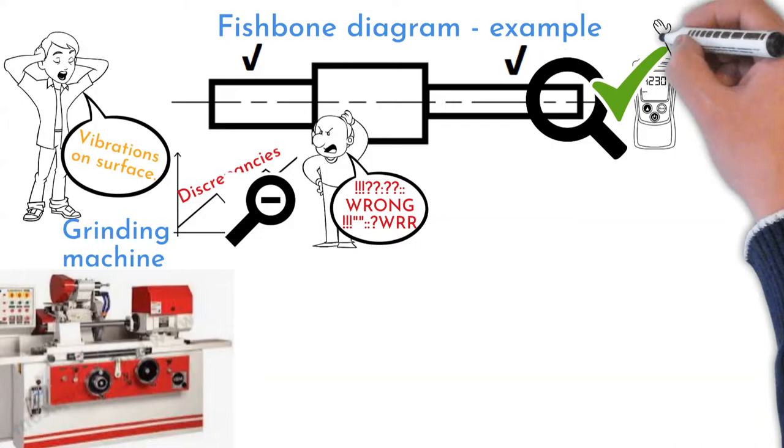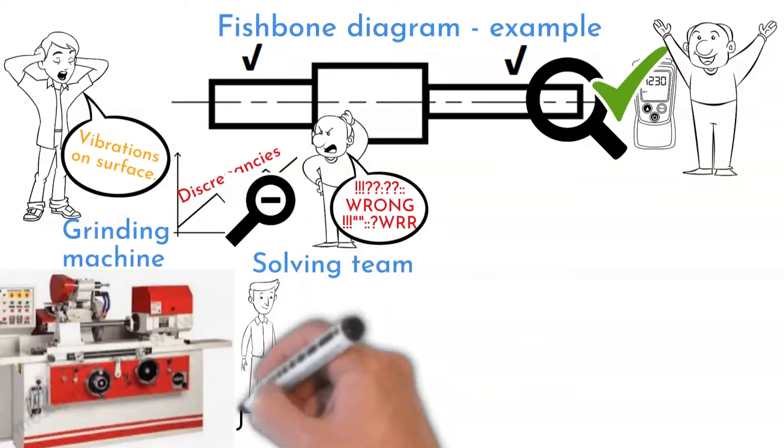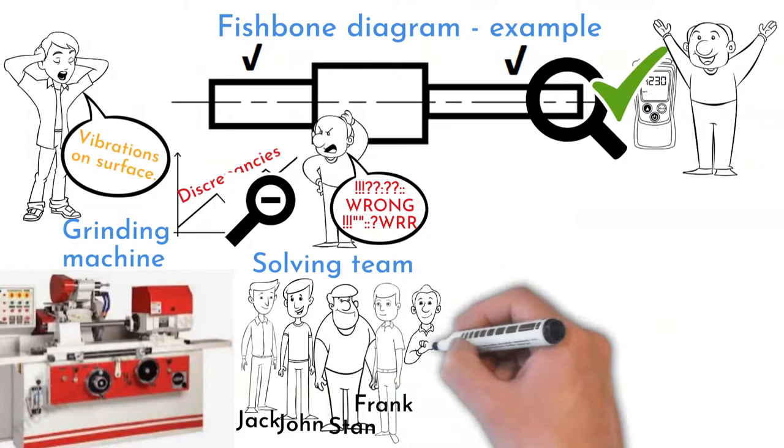First what team did is develop robust method to identify vibrations to stop customer complaints. Then team was assembled to find problem root cause. Production supervisor, process engineer,